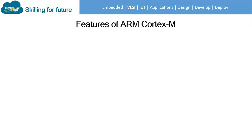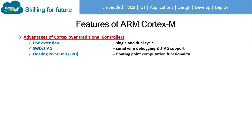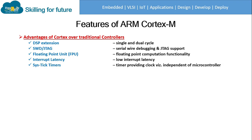The features of ARM Cortex-M controllers can be considered as advantages over traditional controllers. First is DSP extension — Cortex-M controllers have built-in digital signal processing extensions that help handle single and dual cycle instructions. Next is SWD or JTAG — these controllers can be debugged using Serial Wire as well as traditional JTAG support. Floating Point Unit enhances the floating point computational functionality. Interrupt latency is the time required to move from the general routine to the interrupt service routine, and in Cortex-M controllers this is very low.